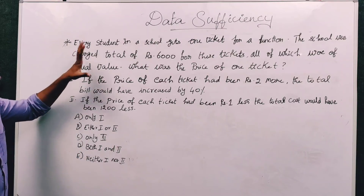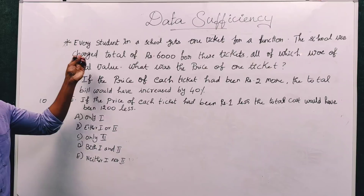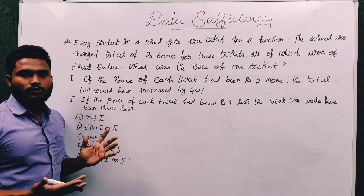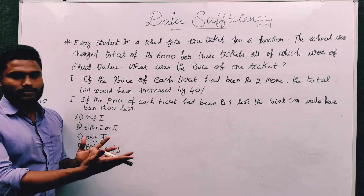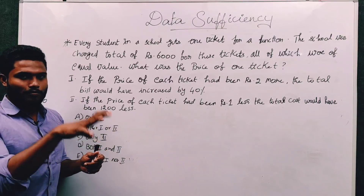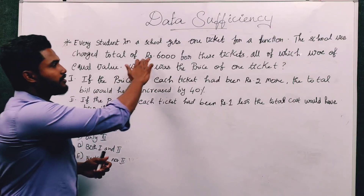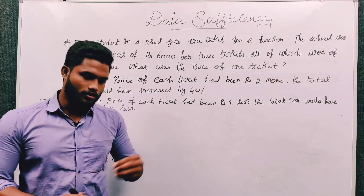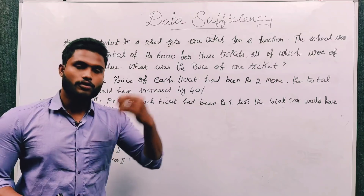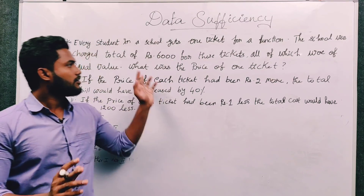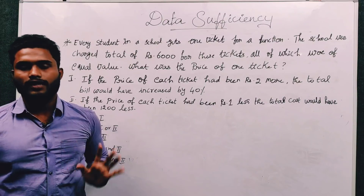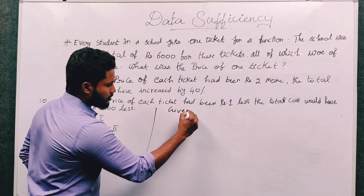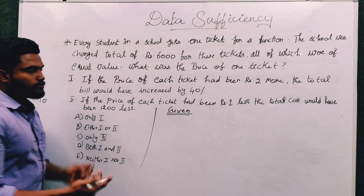Every student in a school gets one ticket for a function. The school was charged a total of Rs. 6000 for these tickets, all of which were of equal value. So what was the price of one ticket? Total tickets charged is Rs. 6,000.